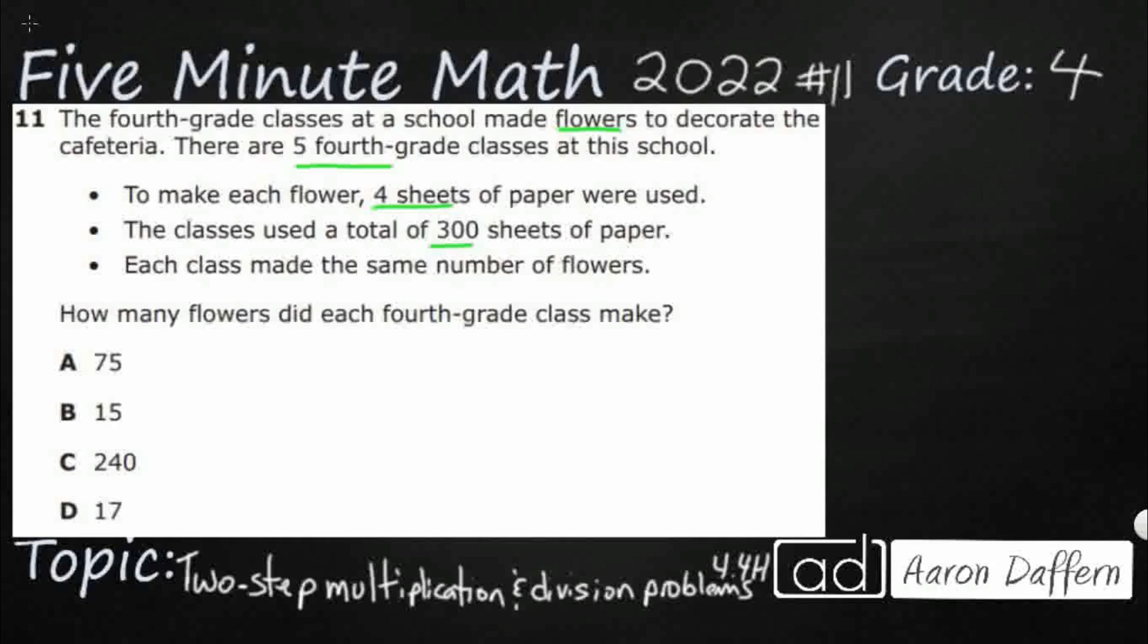I'm going to draw a strip diagram to kind of help us see here. So I've got 300 sheets, right? That's my total. And if I get four of these sheets, that's going to make a flower. It takes four sheets to make each flower.